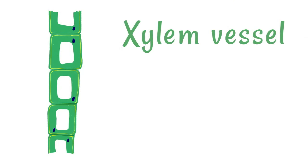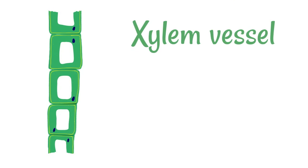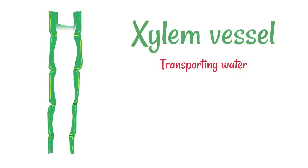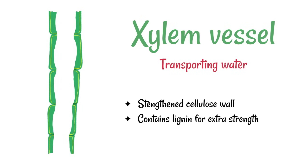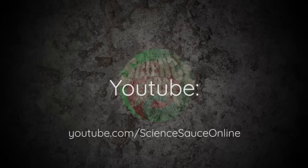Next up is the xylem vessel. Now this is not an individual cell but it is made from the remains of cells. Its job is transporting water, and the cells that once made it up have hollowed out to form a sort of tube. It's got a strengthened cellulose wall, it contains lignin for extra strength, and obviously it's got that hollow lumen in order for water to move through it.